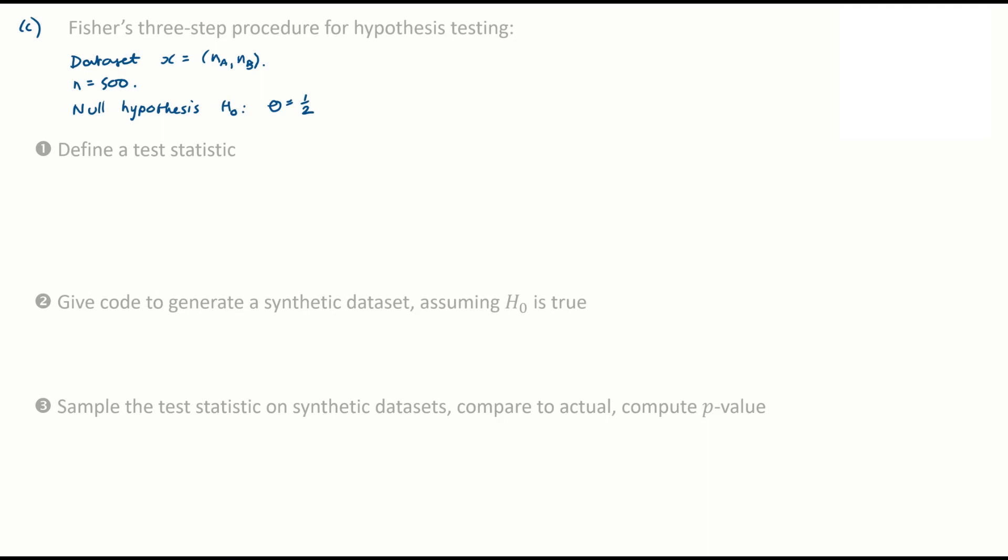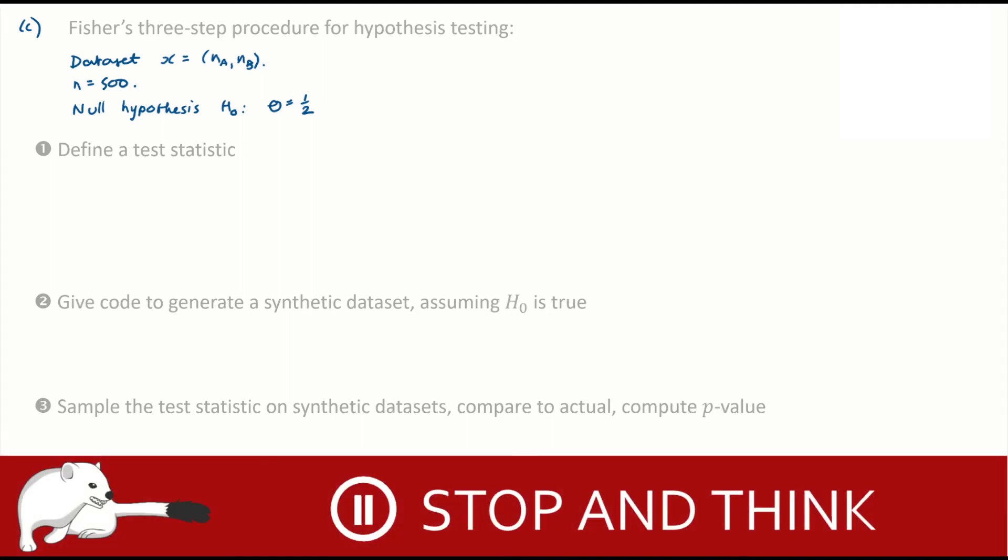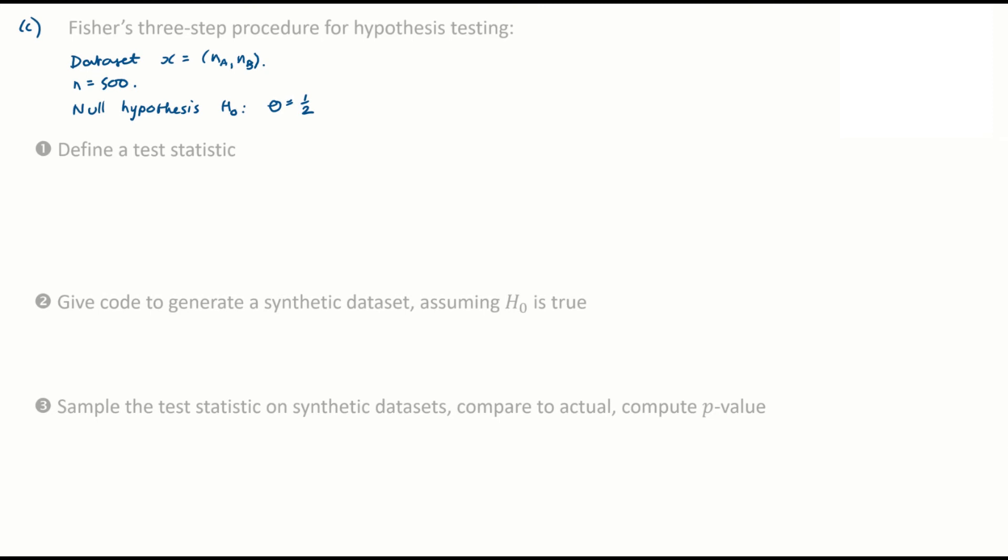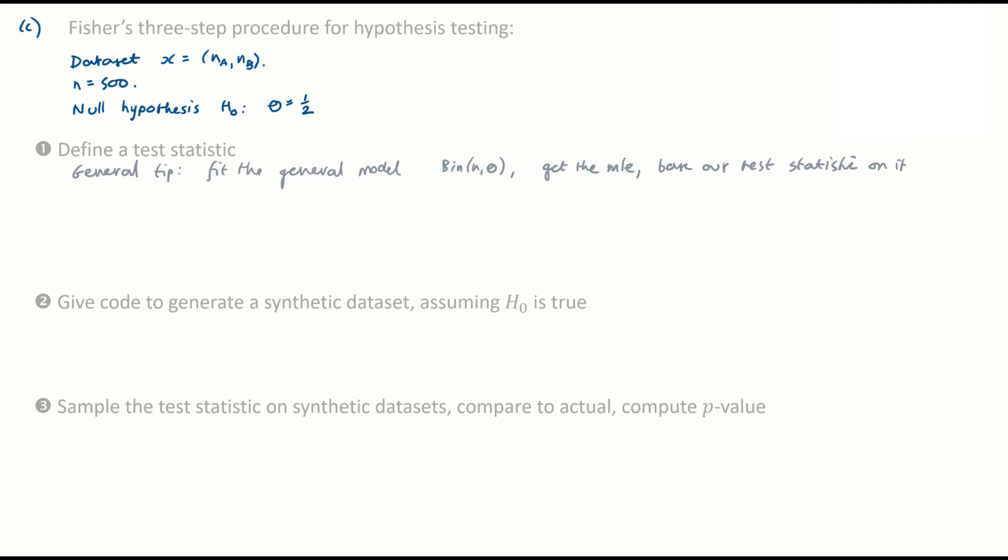Okay, first step, define a test statistic. Sometimes questions tell you which test statistic to use. This question doesn't. So where on earth do we find a test statistic from? One general tip is if you have a parametric model, write out the parametric model and get maximum likelihood estimators for any of the unknown parameters and base our test statistic on those MLEs. Here, there's only one unknown parameter, theta, and the maximum likelihood estimator for theta hat is NA divided by N. That's what we wrote out as our answer to part A. And that seems like a plausible guess for a test statistic. Let's just define that to be our test statistic. The idea of a test statistic is it should behave differently under H naught versus if H naught is false. If H naught is true, we'd expect this test statistic to be roughly equal to a half. And if H naught is false, the test statistic might be bigger or it might be smaller.